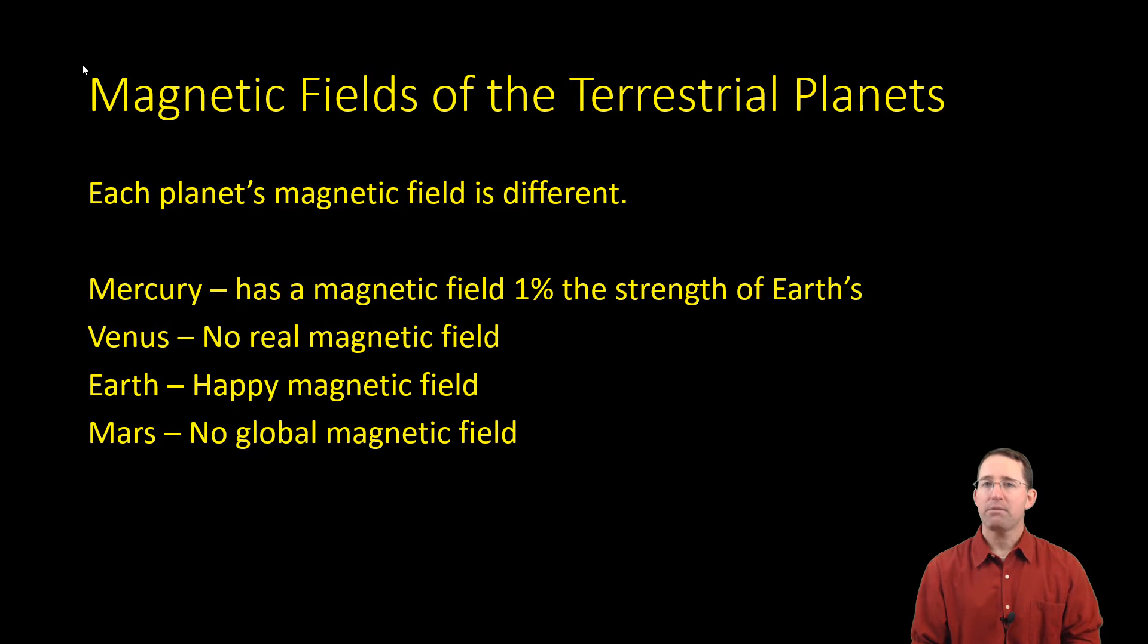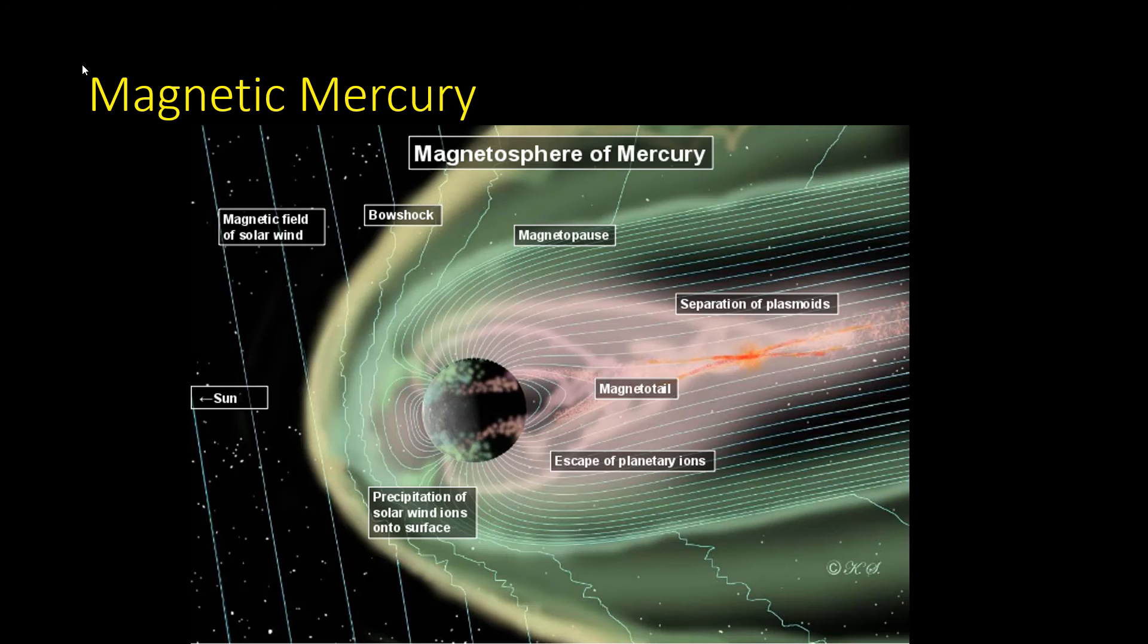Here we see the magnetic field of Mercury. The Sun is on the left, and the solar wind is magnetic in nature, and so it's compressing the magnetic field lines on the side towards the Sun and stretching them out over here going away from the Sun. What this graphic does not show is how weak Mercury's magnetic field is.